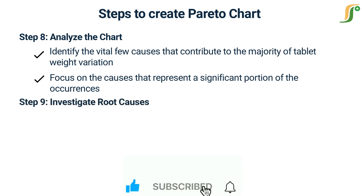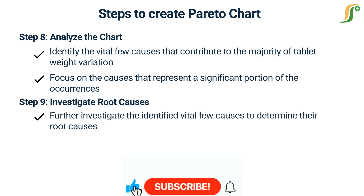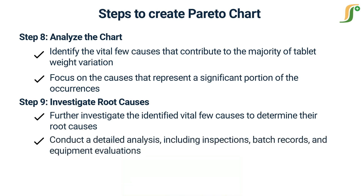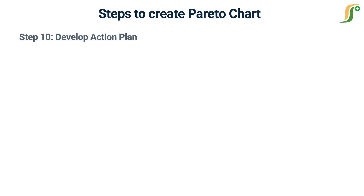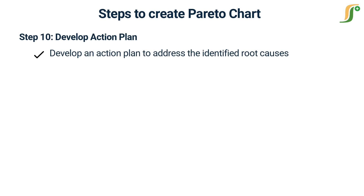Step 9 — Investigate root causes: further investigate the identified vital few causes to determine their root causes. Conduct a detailed analysis including inspections, batch records, and equipment evaluations to uncover the underlying factors contributing to each cause. For example, variation in tablet press speed may be due to parameters written in the master manufacturing records.